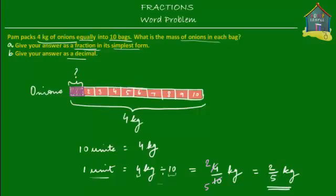So the mass of onions in each bag is equal to 2 fifths of a kilogram in fraction format. That's the answer to part A. Now the second part of this question is to give the answer as a decimal, so we have to find out what the mass of onions in each bag will be equal to in decimal format.